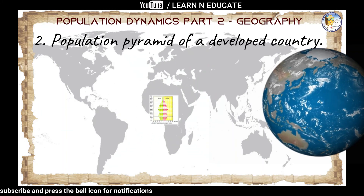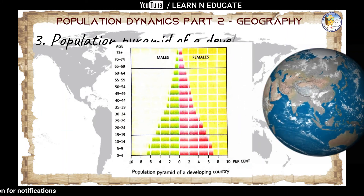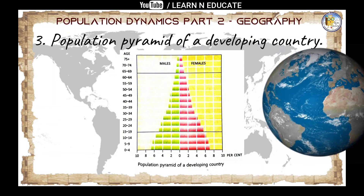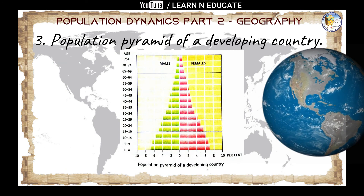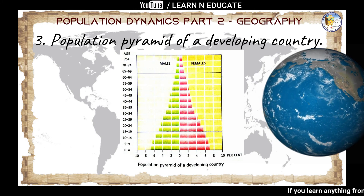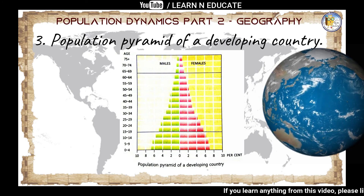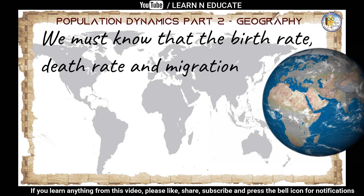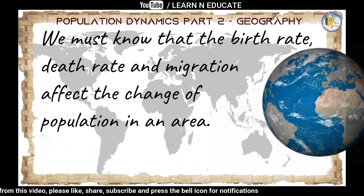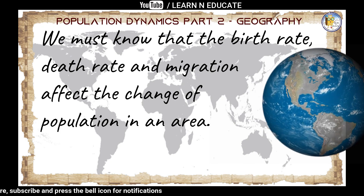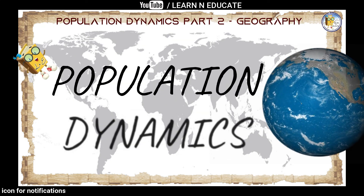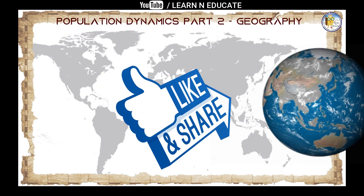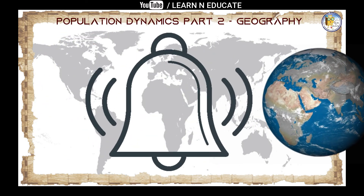The next figure is the Population Pyramid of a developing country. It shows that due to a decrease in both birth rate and death rates, the base of the pyramid has become less broad. Because of the lower birth rate, the base is less broad compared to the underdeveloped country. This was all about the composition of population. The birth rate, death rate, and migration affect the change of population in an area — and that was all about Population Dynamics. Hope you understood the chapter. Do like, share, and subscribe, and don't forget to press the bell icon. Thank you.